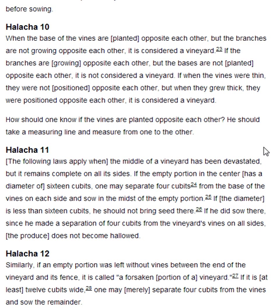Halakha 11. The following laws apply when the middle of a vineyard has been devastated, but it remains complete on all its sides. If the empty portion in the centre has a diameter of sixteen cubits, one may separate four cubits from the base of the vines on each side, and sow in the midst of the empty portion. If the diameter is less than sixteen cubits, he should not bring seed there. If he did so, since he made a separation of four cubits from the vineyard's vines on all sides, the produce does not become hallowed.